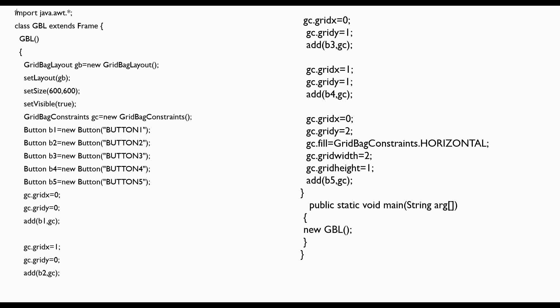Now let's see how to set the layout of a container as GridBagLayout with the help of a program. This is the import line in which the AWT package is imported for frame and other AWT controls. GBL is the class name which extends the Frame class. This is the class constructor in which we created an object of GridBagLayout called gb. At this line, gb is passed as a parameter to the setLayout method to set the layout of the frame as GridBagLayout.